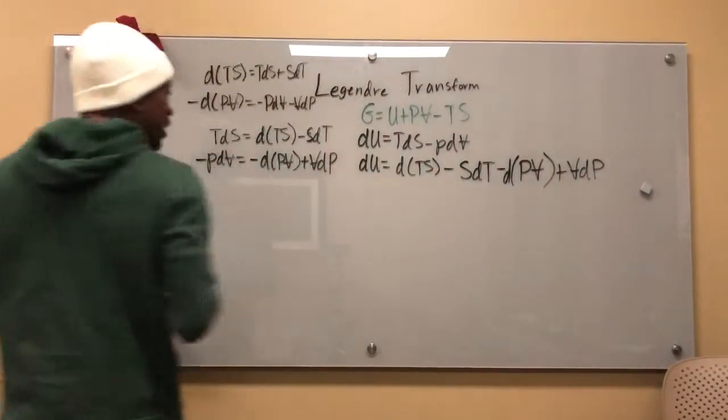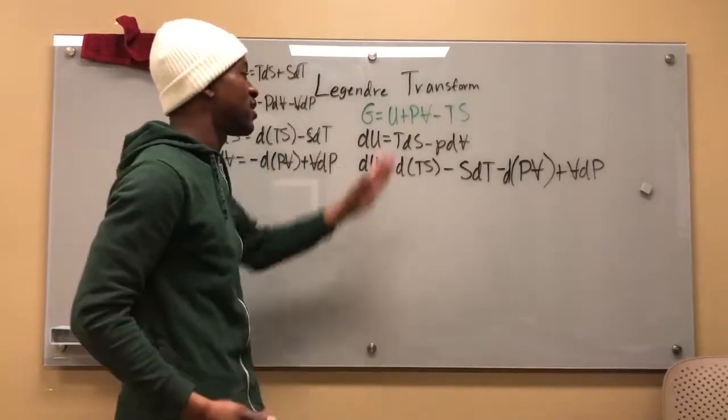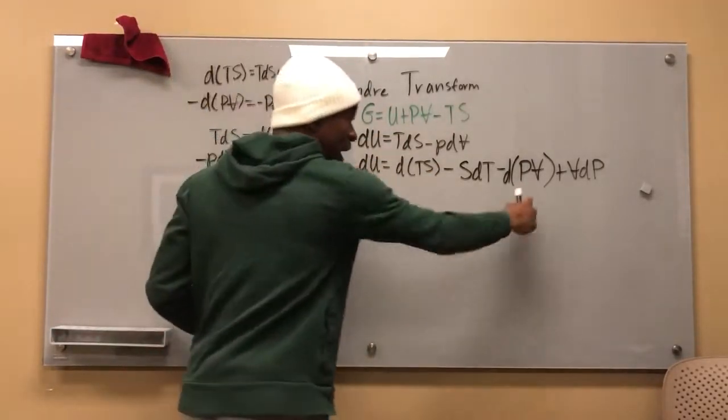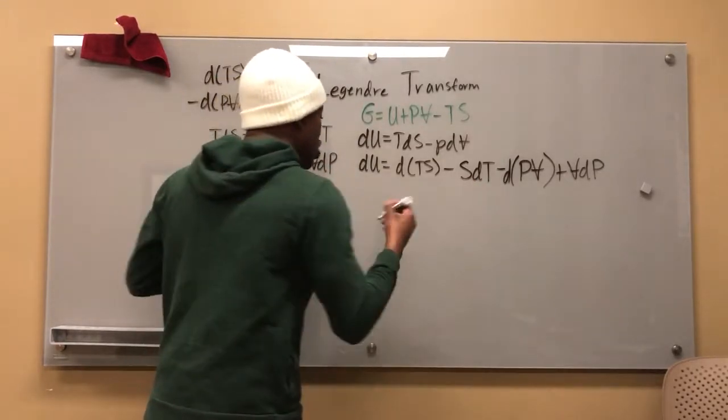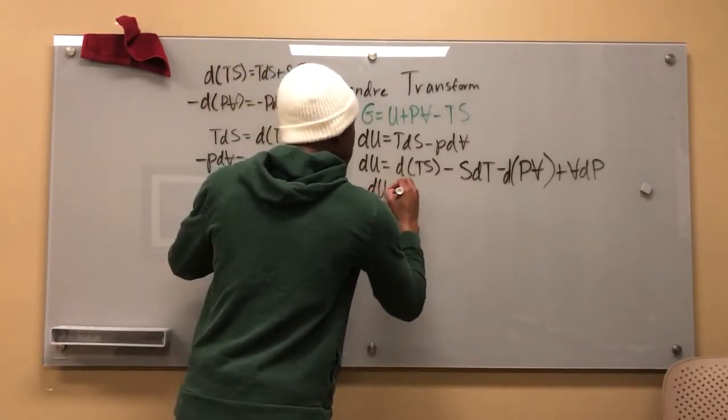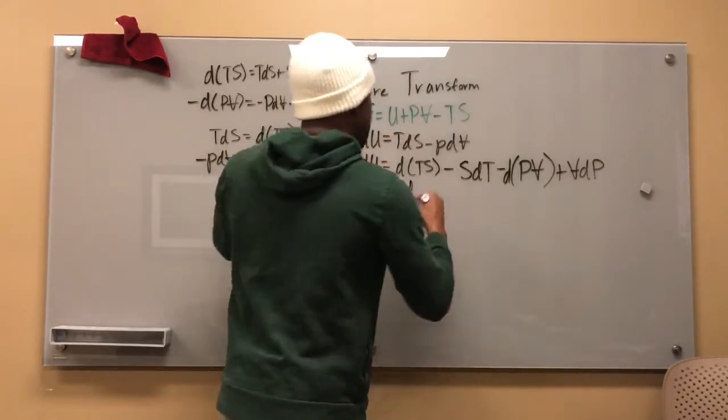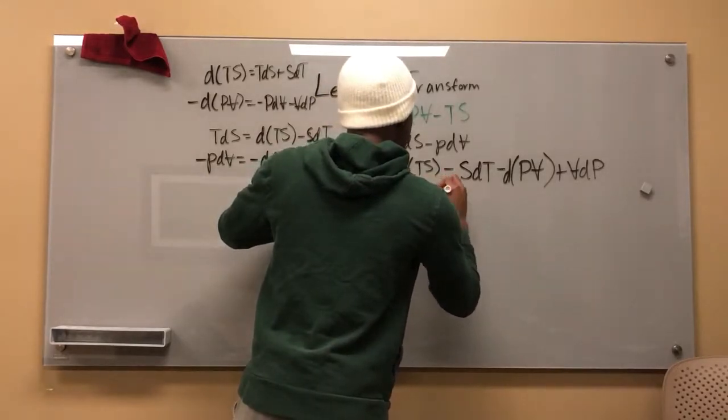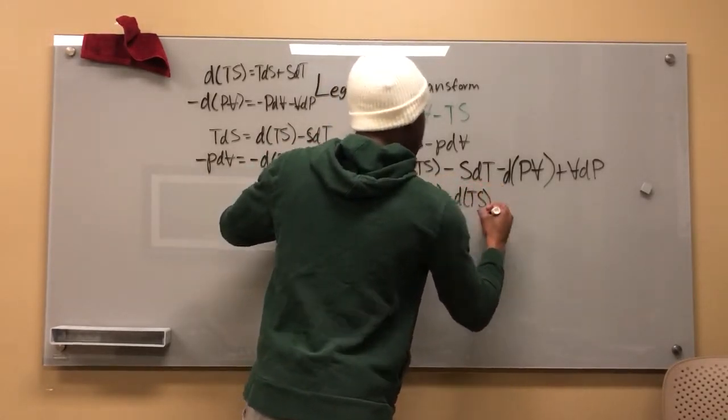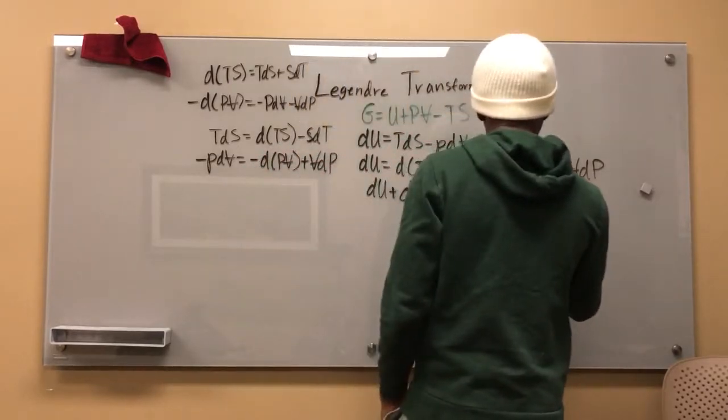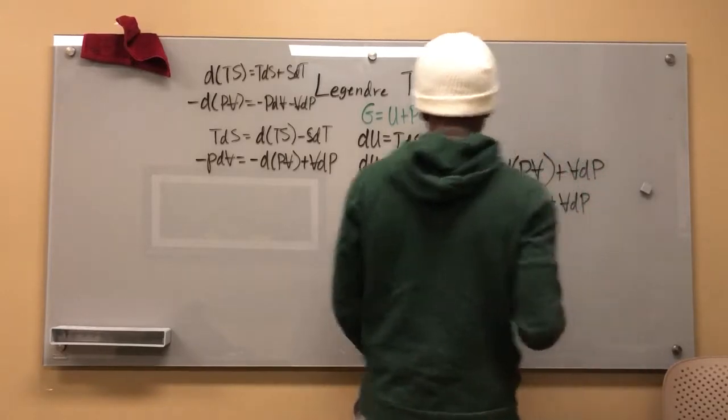So now what I've gone ahead and done is gotten these into differential form. And I know that I have a minus TS here and a plus PV here. So I'm going to add a PV here and subtract the TS here. So I get the DU minus, let me say plus, just because I wrote it like this, plus DPV minus DTS is equal to negative SDT plus VDP, okay?